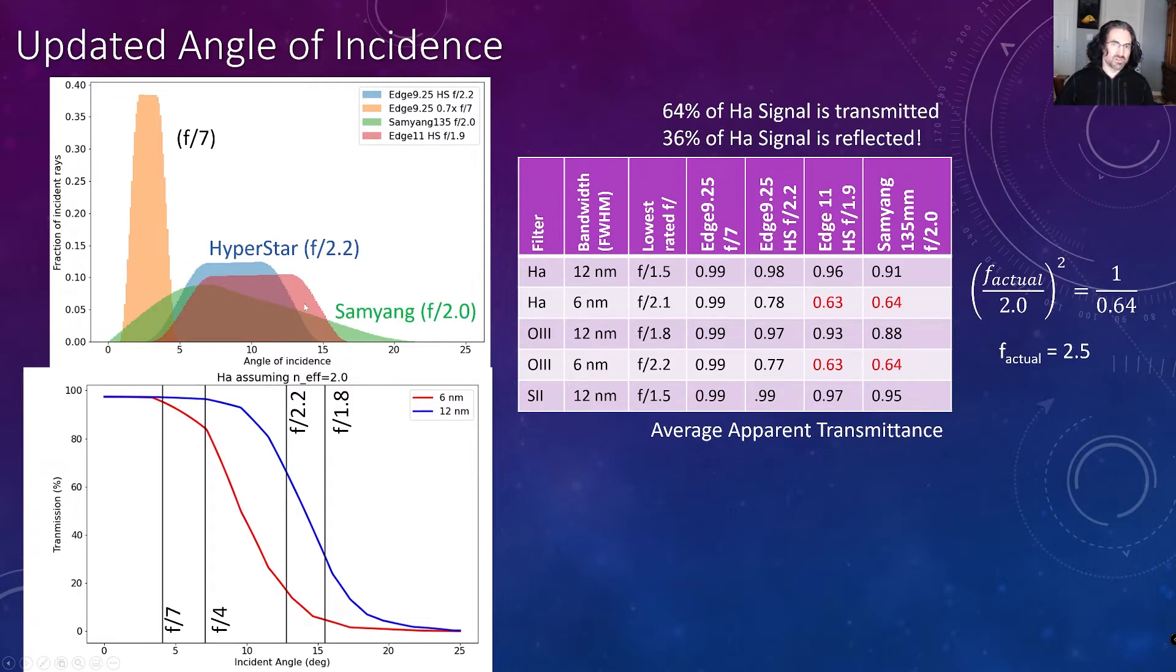I also have an edge 11 with its hyperstar, and now I've included that fast Samyang lens at the 135mm f/2 lens. We can see by removing that central obstruction, we actually get angles all the way down from zero, with most of the contribution coming in around this 5 to 7 degree increment, but we also have contributions all the way out to about 20 degrees.